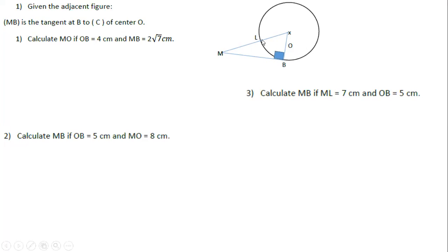What does OL represent? OL is also a radius, since O is the center and L belongs to the circumference of the circle. Why did I use the right angle sign at B when I drew triangle OBM? Because whenever we have a tangent to any circle, this tangent will be perpendicular to the radius at the point of tangency, which is B. So angle OBM is a right angle at B.